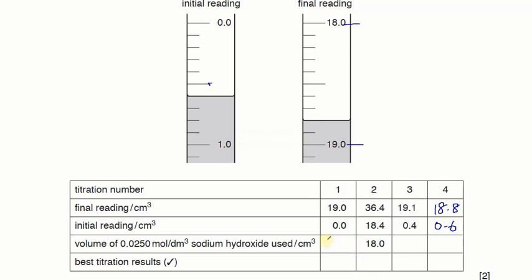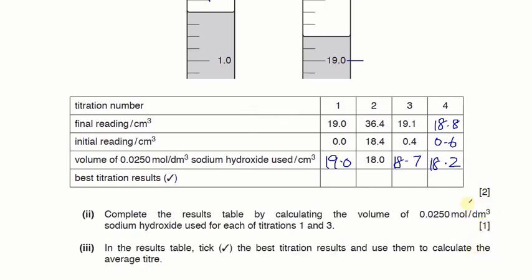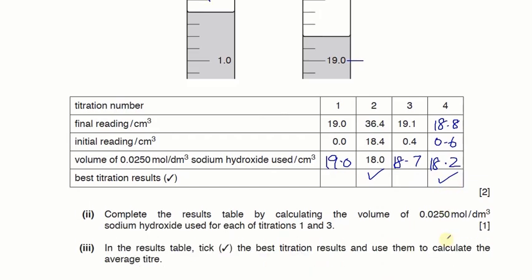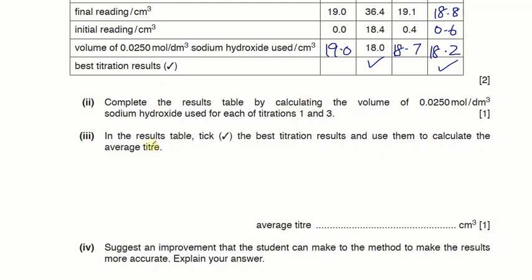And now we will subtract. The first one will be 19.0, this one will be 18.7 and this would be 18.2. So 18.2, 18.7, 18 and 19. So now we have to find which two titrations are the best. The best titrations are those which are close to one another. The two titrations which are closest to one another are 2 and 4 because they have a difference of 0.2. So we will take them and choose them as the best titrations. So now we have to find the average titre.